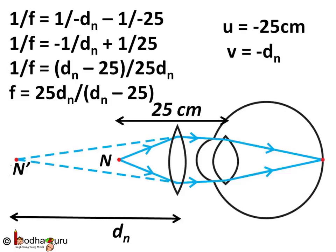Now, here we see d_n is greater than 25 because the near point of the person has receded. So, d_n minus 25 is positive and this means the focal length is positive and we need biconvex lens. So, remember if the focal length is positive then the lens is convex lens.